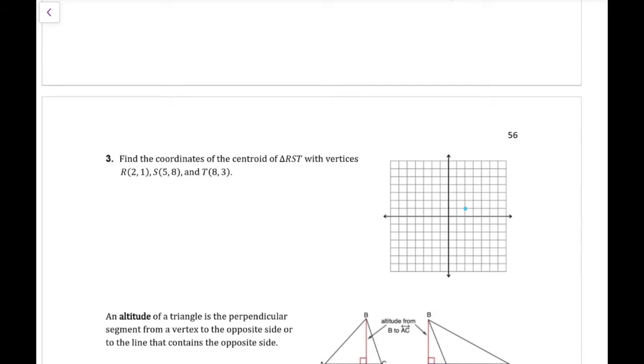Example three, we are finding the centroid of triangle RST. Now it's given us three vertices. We're going to go ahead and plot those points. We have a point at (2,1), we have one at (5,8), and we have one at (8,3). Now since we're finding the centroid, we're finding the midpoint of the sides and connecting to the opposite vertices.